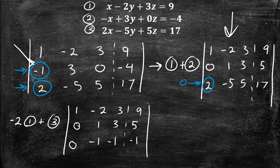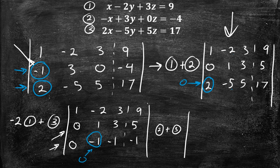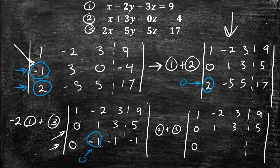So we have zeros underneath the leading 1 in the first column. Now we want a 1 in the middle of the diagonal, which we have. Therefore we want to make the number below that 1 a zero, and we do that by adding rows 2 and 3 together. The top row stays the same: 1, negative 2, 3, 9. Row 2 stays the same: 0, 1, 3, 5. Adding rows 2 and 3: 0 plus 0 is 0; 1 minus 1 is 0; 3 minus 1 is 2; 5 minus 1 is 4.